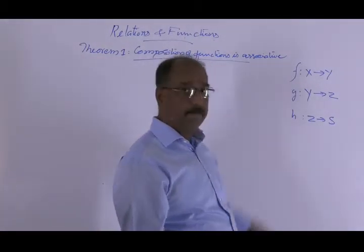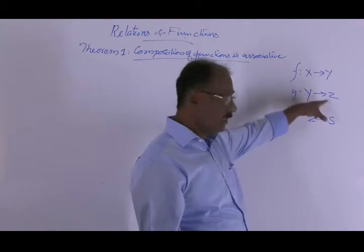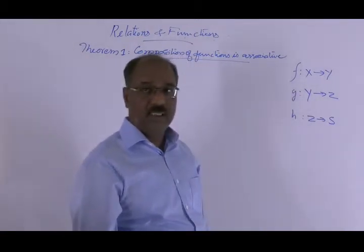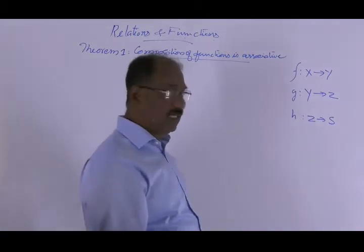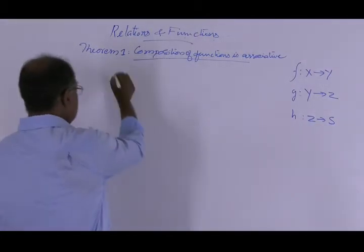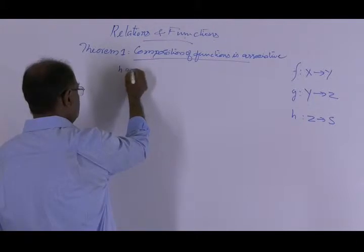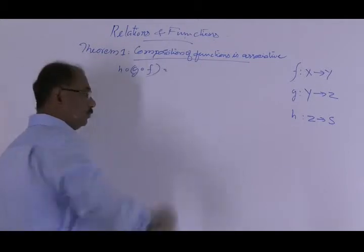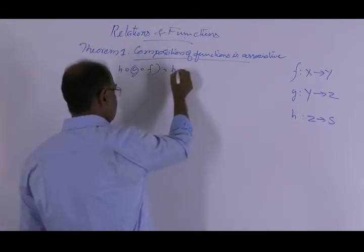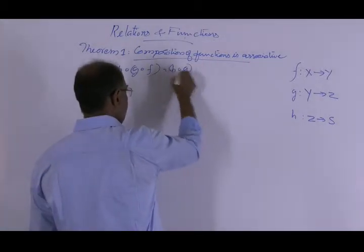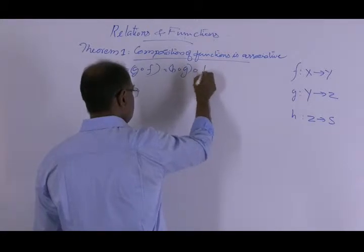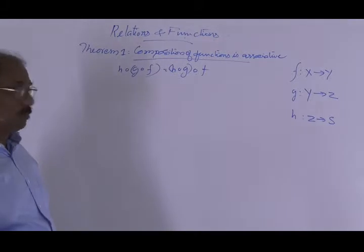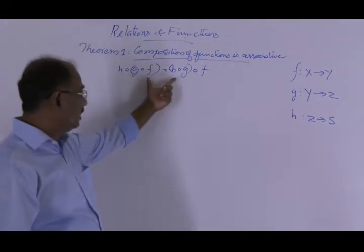f from X into Y, g from Y into Z, and h from Z into S. Then this theorem says that h∘(g∘f) is equal to (h∘g)∘f. So this is the associative property — composition is associative.